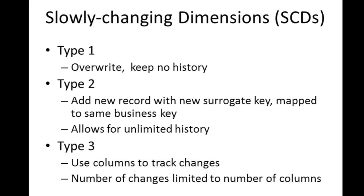But if you do wish to track historical data, you might want to go with a type 2 or a type 3. In a type 2 slowly changing dimension, you'll add a new record. That new record will contain a new surrogate key — surrogate keys are keys inside of your data warehouse as opposed to the keys used by the transactional system. But this new record will map back to the same transactional key, the same business key. This way, you have an unlimited history because as the dimension attributes change, you simply add new records and don't delete any of the old data.